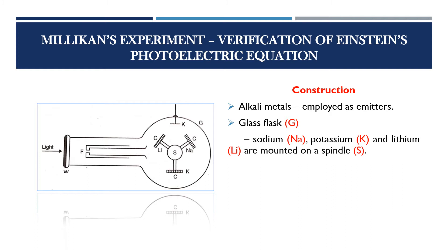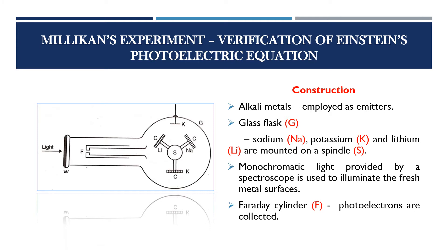The glass is evacuated to a very high vacuum to free the metals from all absorbed gases. Monochromatic light provided by a spectroscope is used to illuminate the fresh metal surfaces. The photoelectrons are collected by the cylinder named as Faraday cylinder.